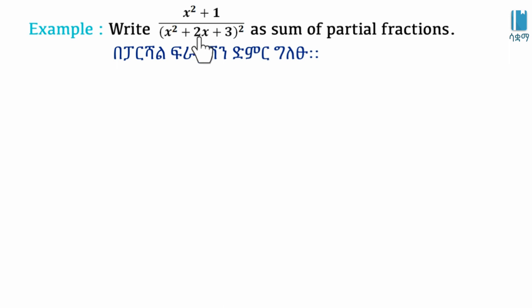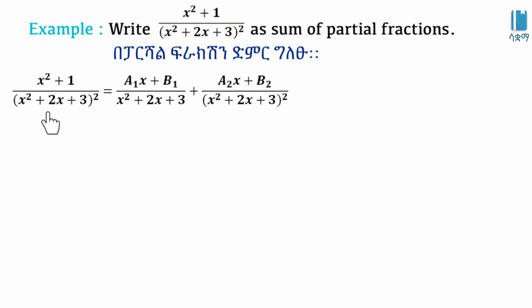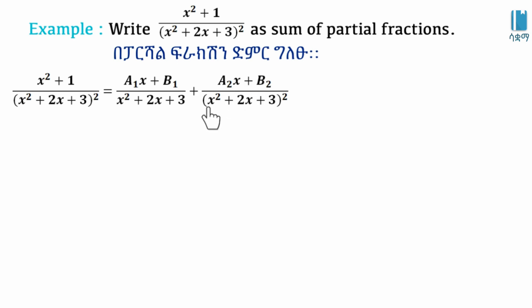We write x squared plus 1 over (x squared plus x plus 3) squared. Since the discriminant b squared minus 4ac gives a negative value, x squared plus x plus 3 cannot be factored further with a linear factor. So we write it as: A1x plus B1 over (x² + x + 3), plus A2x plus B2 over (x² + x + 3) squared. This is the partial fraction form.